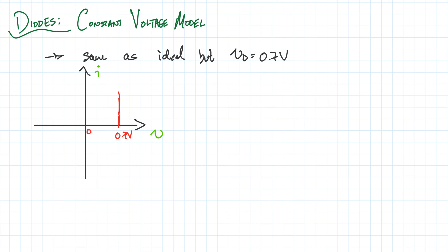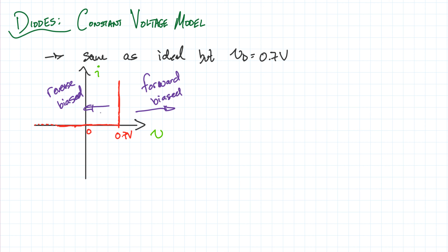At 0.7 volts the current goes straight up, and before that the current is entirely 0. This is why we call it the constant voltage model — when it's on it has a constant voltage of 0.7, and when it's off the current through it is 0. We have two regions: the reverse bias region where the diode is off, and the forward bias region where it's on.